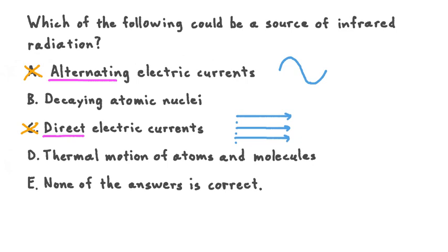Moving on to option B, decaying atomic nuclei, this is a process where an atomic nucleus breaks or splits apart into smaller pieces. That's called fission, and in the process releases electromagnetic radiation. When a break like this happens, the radiation typically emitted is gamma radiation—the emission of gamma rays. Once more, this option is a source for a particular type of electromagnetic radiation, but not the type we're interested in, infrared radiation. We'll cross off option B too.